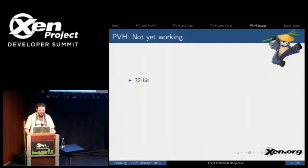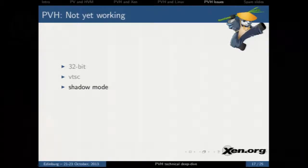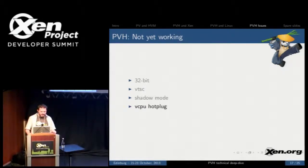A couple of things in PVH that are not yet working at this point: 32-bit, which hasn't been implemented yet. Virtual TSC — the only TSC mode supported is reading the hardware thing directly from the CPU. Shadow mode is not yet implemented. And the VCPU hot plug for the Linux side is not yet implemented. And I'm sure there's a larger number of fix-mes in the code that haven't been fixed either.